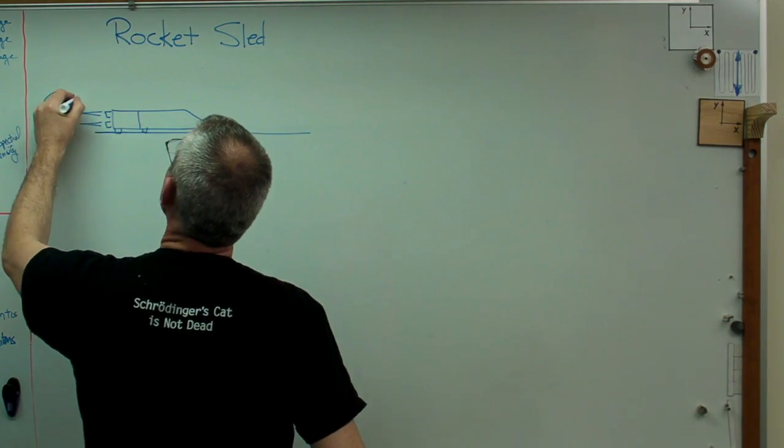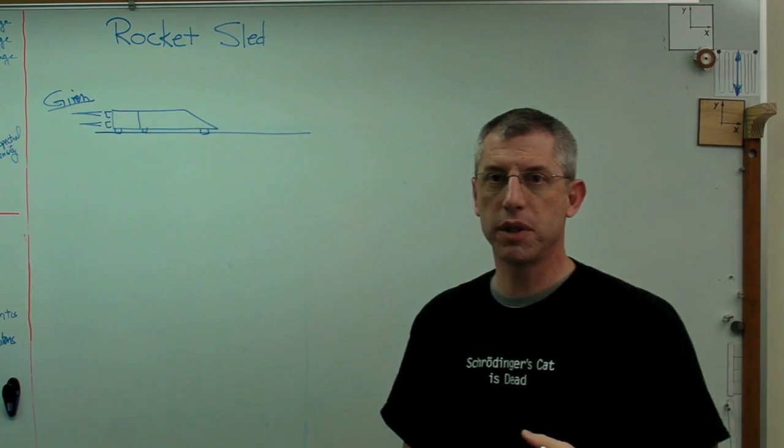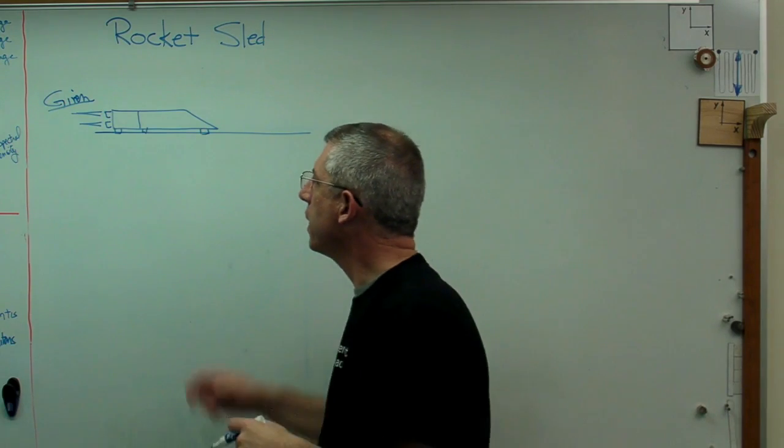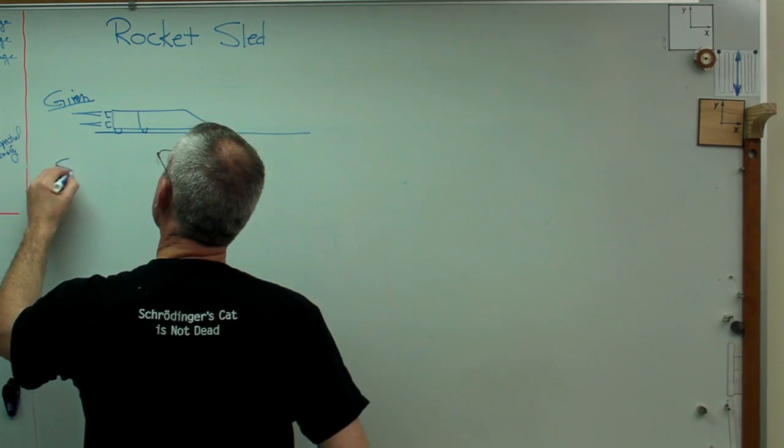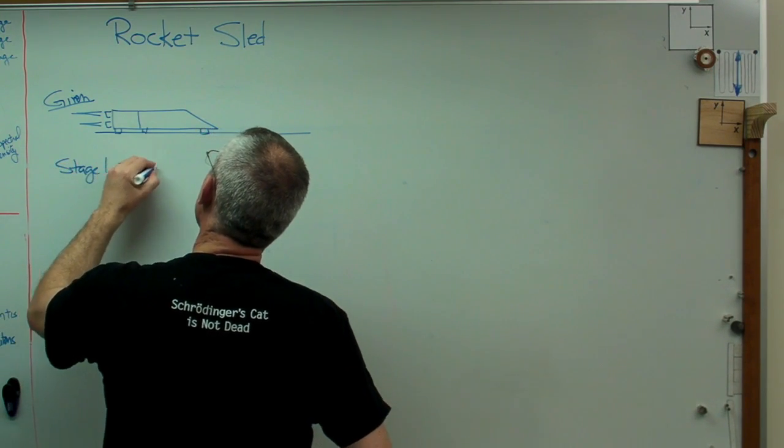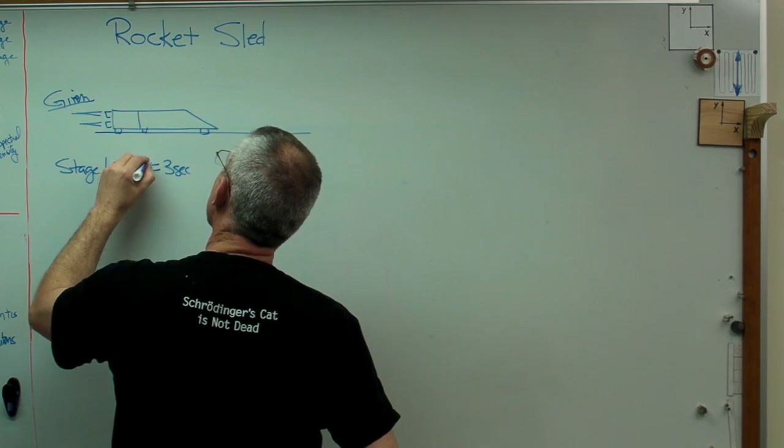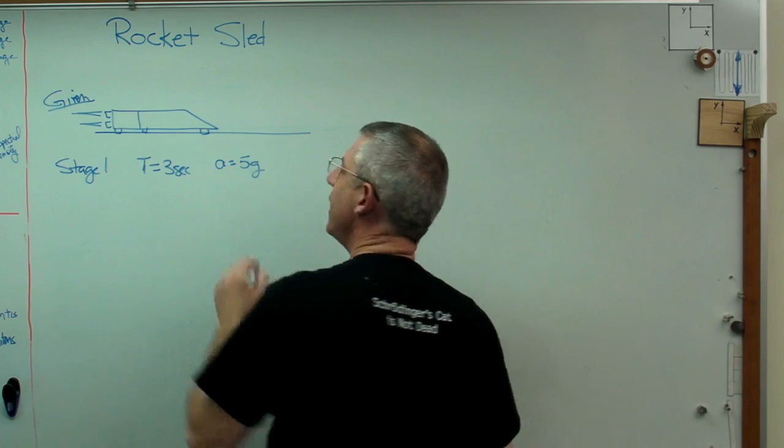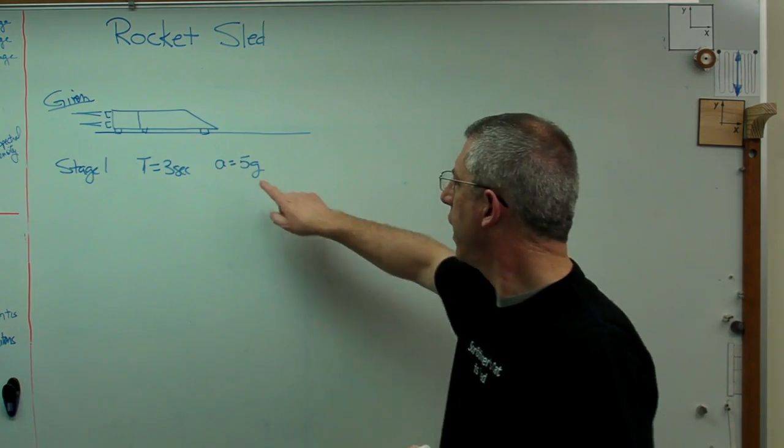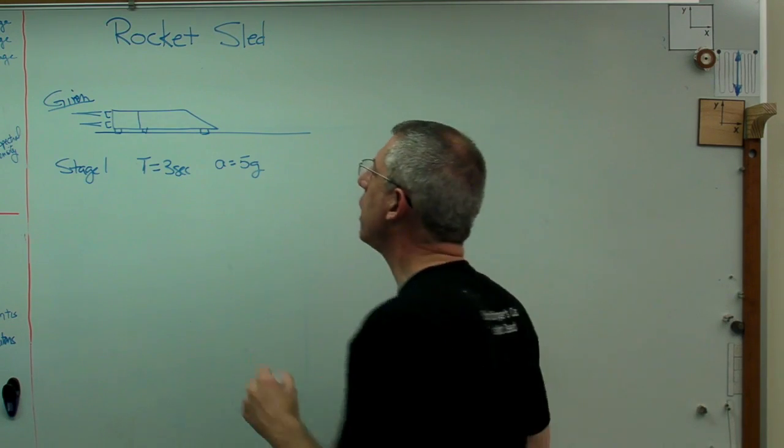All right. So let's say we're given this and let's assume a representative set of performance numbers. Now I'm kind of making these up because there's so much design variation depending on the experiment you're trying to run. So let's say stage one fires for three seconds. I'll make that a capital T. And an acceleration of five G's. Now I think that's probably a little low. I suspect rocket sleds sometimes have accelerations much higher than that.